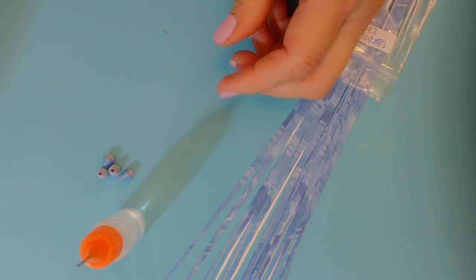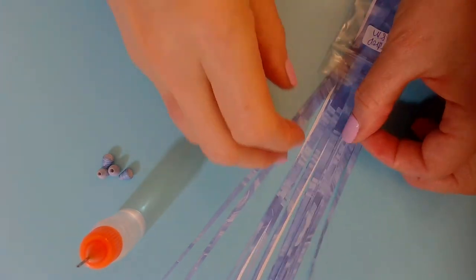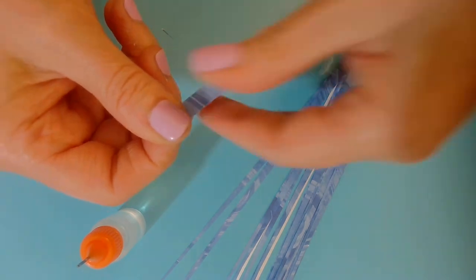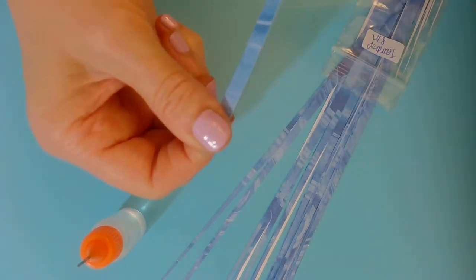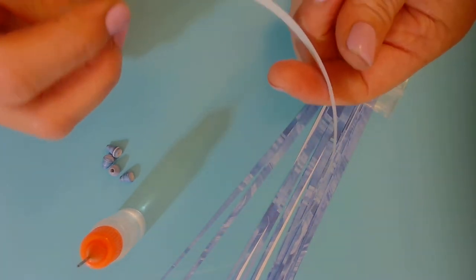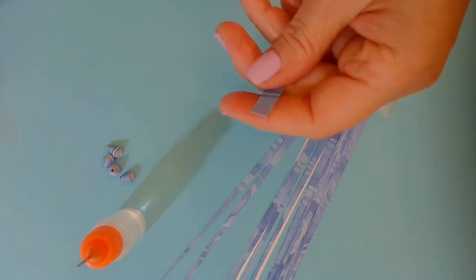Let's get started. For beginners, you want to condition your paper, which means running your fingers through it. This allows the paper to be more durable when rolling and makes it easier. As you can see while I'm conditioning it, you'll notice how it curls. That makes for an easier roll.